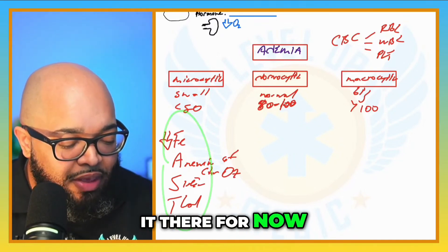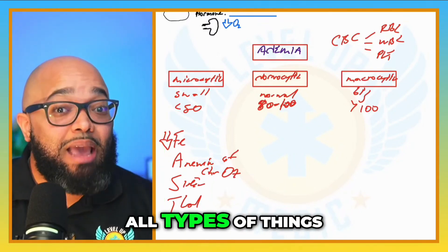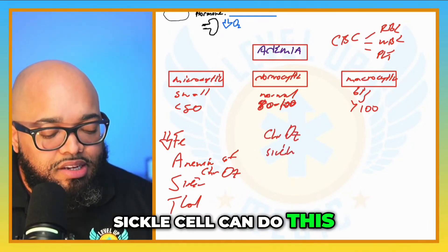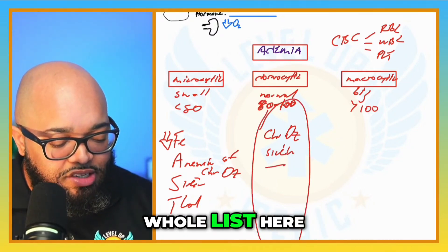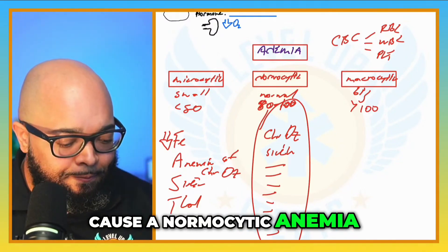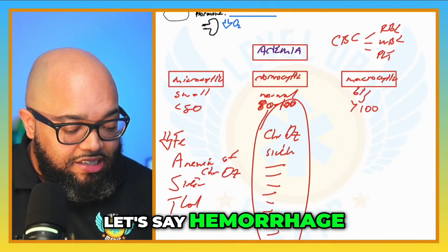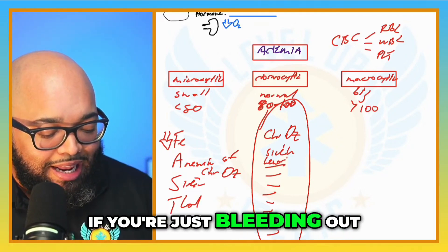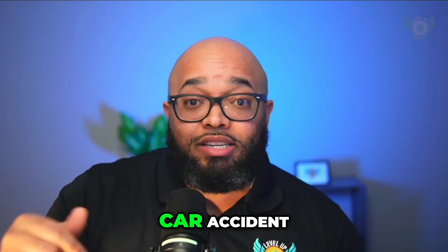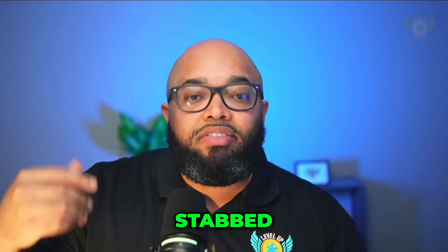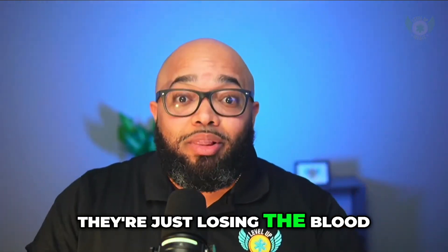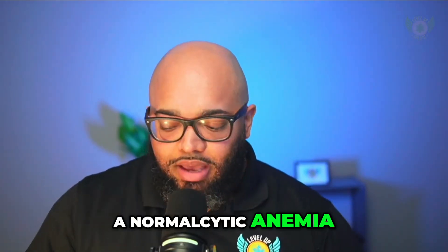When it comes to normocytic anemia, there are all types of causes. Chronic disease can fall in this category, as can sickle cell, and many other conditions. For example, hemorrhage — if you're just losing blood due to trauma like a car accident, gunshot, or stab wound — the blood cells don't change size, you're just losing blood. That would be an example of normocytic anemia.